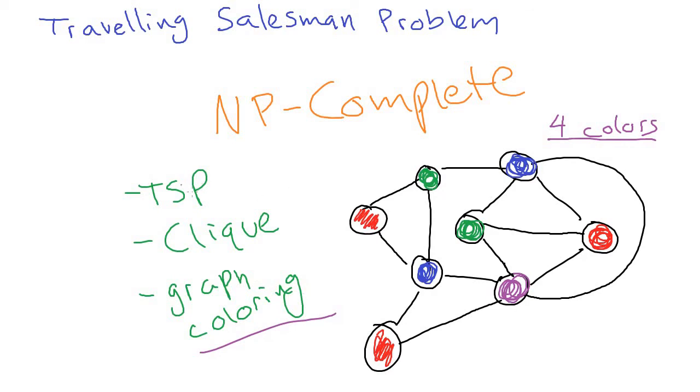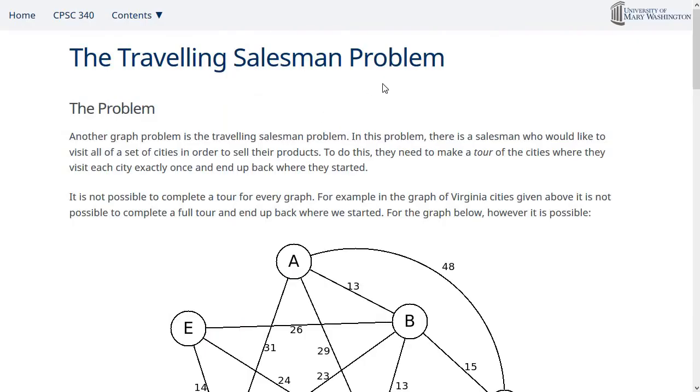These problems also, because graphs are so widely applicable to lots of different areas, these problems can come up in sort of unexpected ways. So as a computer scientist, it's good to be aware that there are problems that we might want to solve that just don't have efficient solutions. And this is a big topic in computer science 326. But since it kind of came up here, I thought I'd talk about it a little bit as well. This idea of NP completeness. So that's all for this video on the traveling salesman problem.